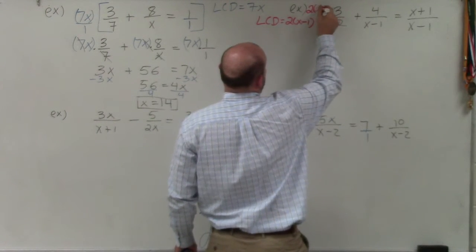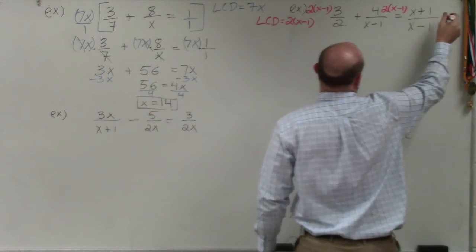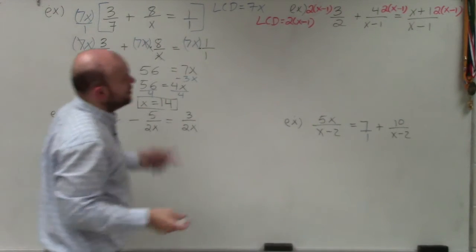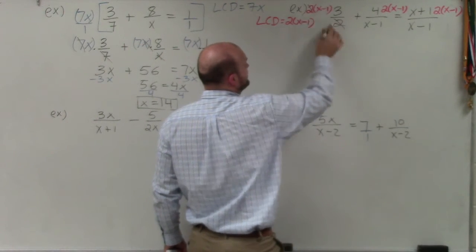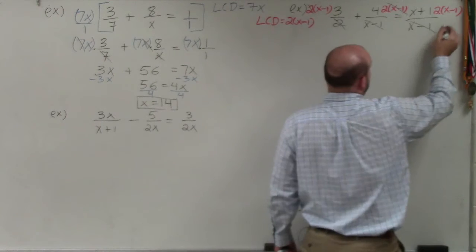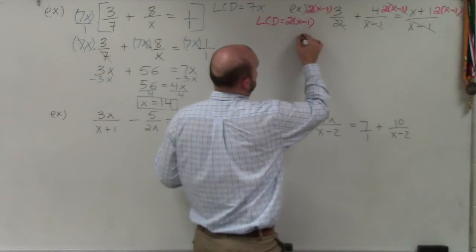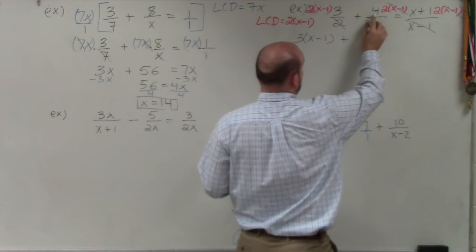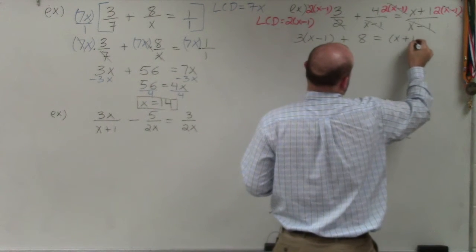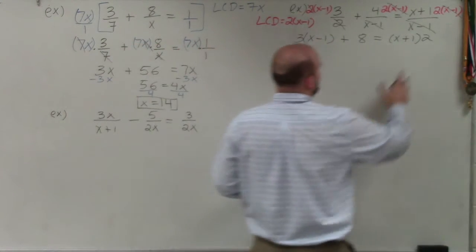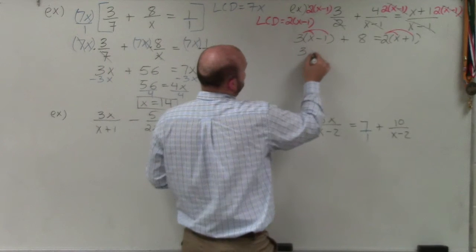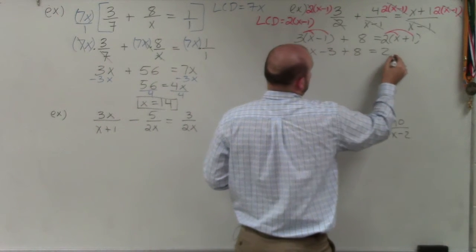So I multiply every term by 2 times (x minus 1). The division property applies: 2 divides out on the first term leaving (x minus 1), and x minus 1 divides out on the second term leaving 2, and similarly for the right side. Applying the distributive property, I'm left with 3 times (x minus 1) plus 4 times 2 equals x plus 1 times 2, which gives 3x minus 3 plus 8 equals 2x plus 2.